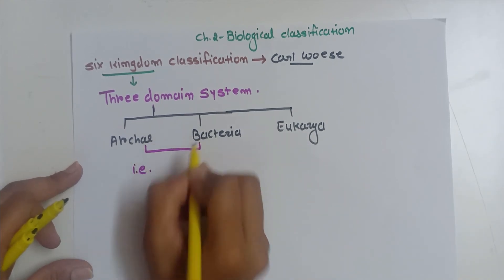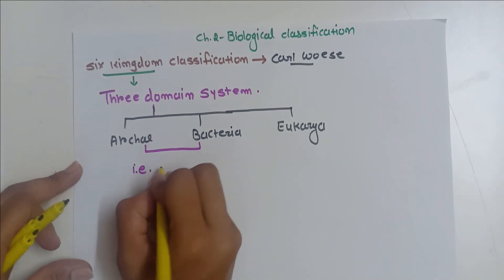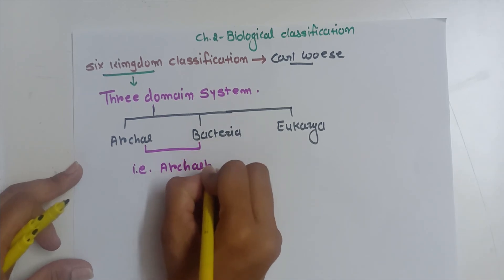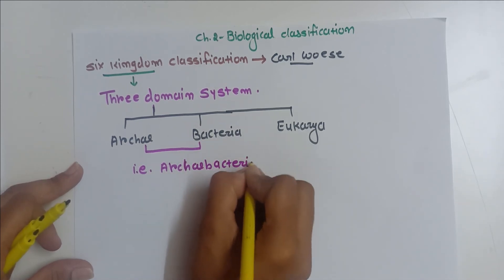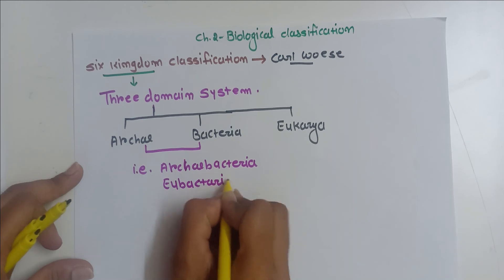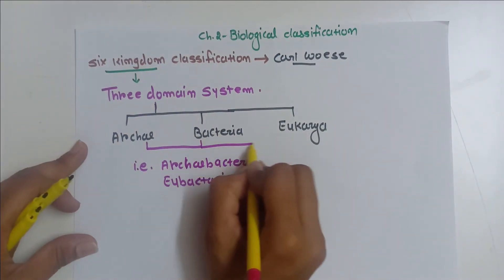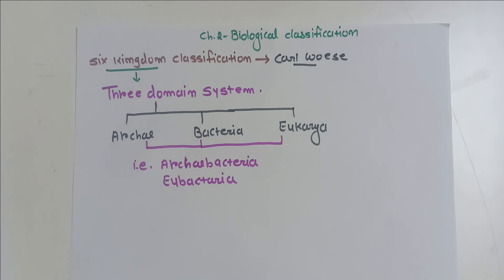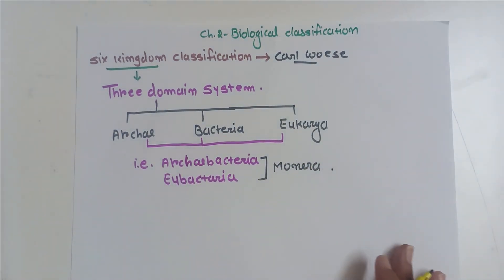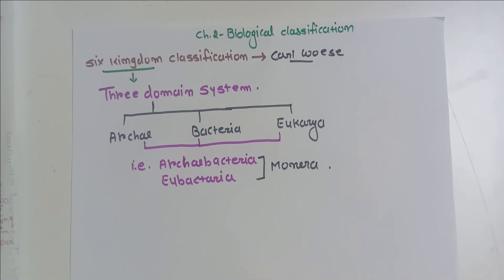It mainly uses the basic principles of the five-kingdom system, but divides the Monera kingdom into two domains: Archaebacteria and Eubacteria. So the Monera kingdom is split into the domains Archaea and Bacteria, while the rest form Eukarya.